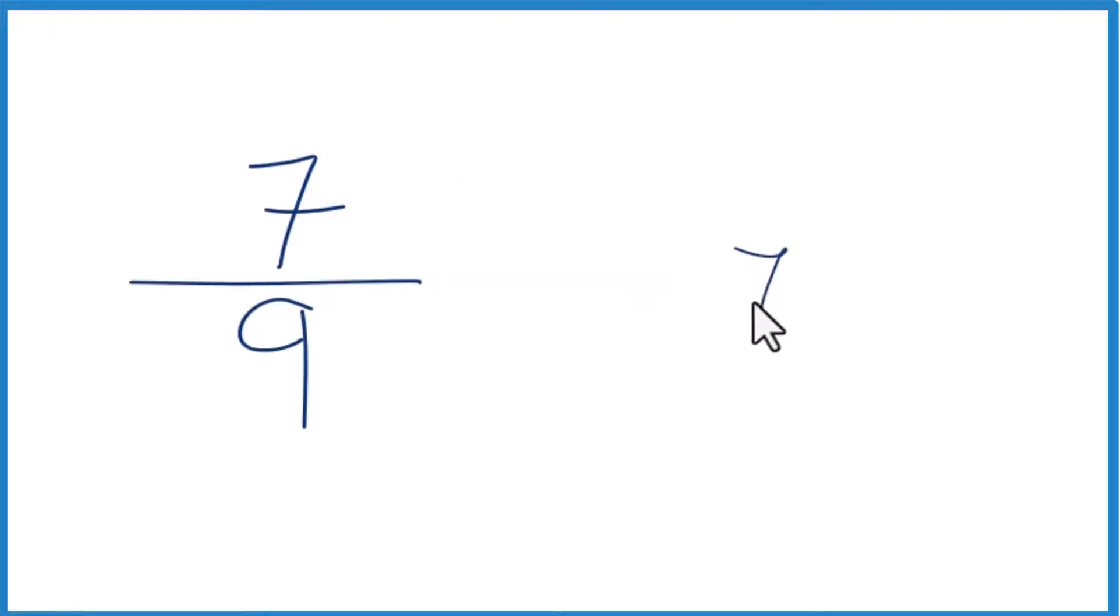So let's take 7 and see how many times 9 goes into 7. 9 doesn't go into 7, but we could call this 70 if we put a 0 and a decimal point up here.